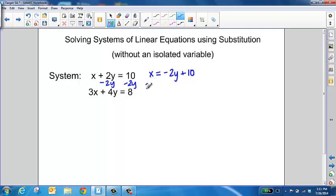From here, we're going to rewrite the other equation so we have the two equations lined up on top of each other. We're going to take the expression from the equation with the isolated variable and substitute it into the other equation. Since it says x = -2y + 10, and x is that isolated variable, we're going to take that expression and substitute it in for x.